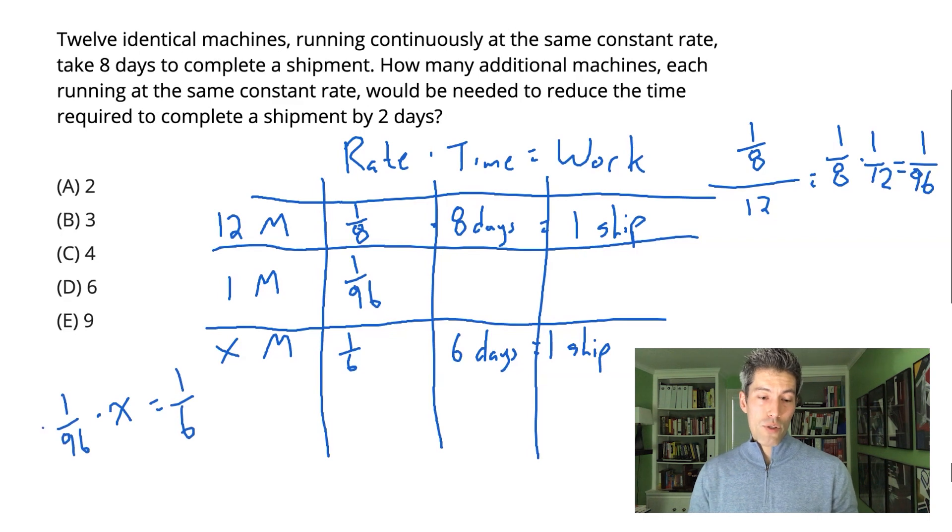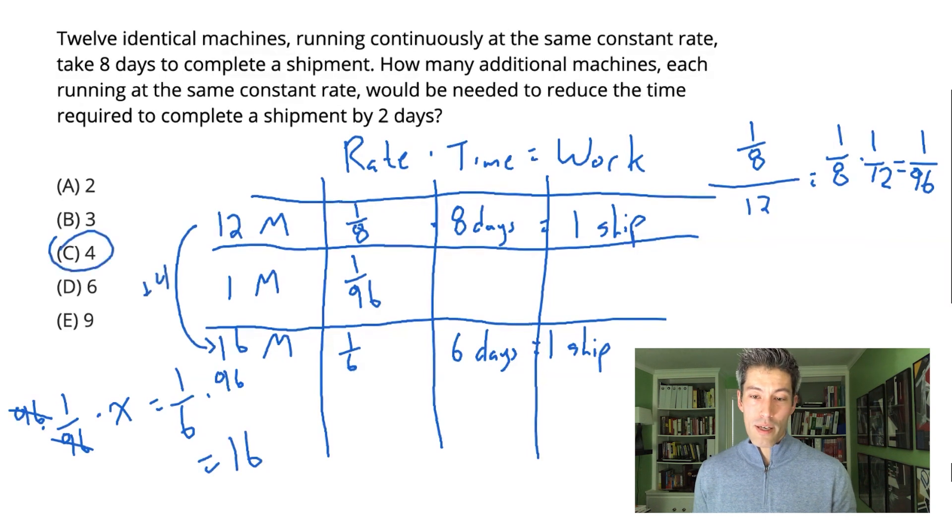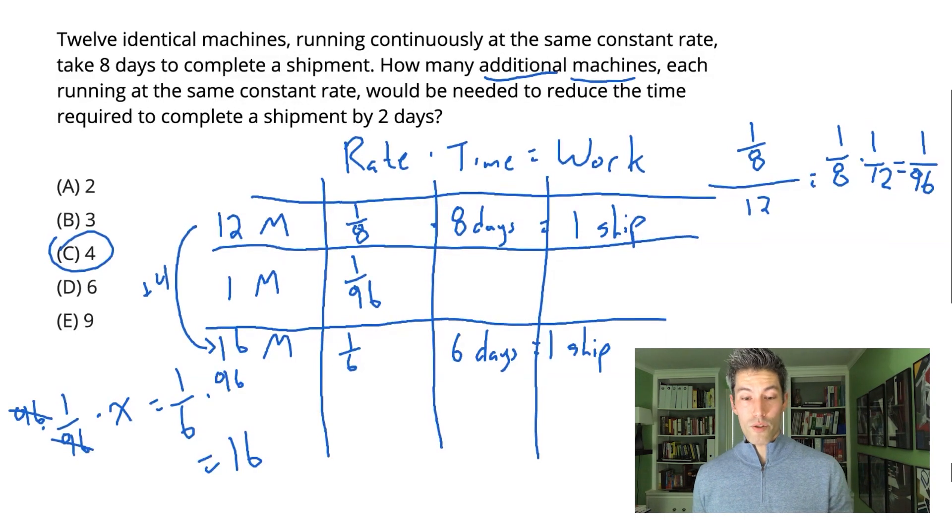So I will solve for X here, multiplying both sides by ninety-sixths. What this turns into is ninety-sixths divided by six, and ninety-sixths divided by six is sixteen. So X here will actually be sixteen machines. And that represents an increase of four machines from where we started. How many additional machines will we need? We'll need four additional machines.